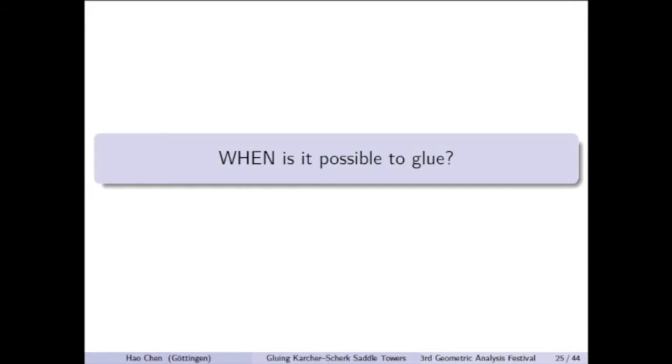In the end of the previous part, we mentioned that the most technical step in our construction is to apply the Implicit Function Theorem to solve the parameters in the Weierstrass data. Our main results are about when the gluing construction is possible. That is, in which condition can we successfully find solutions using the Implicit Function Theorem?